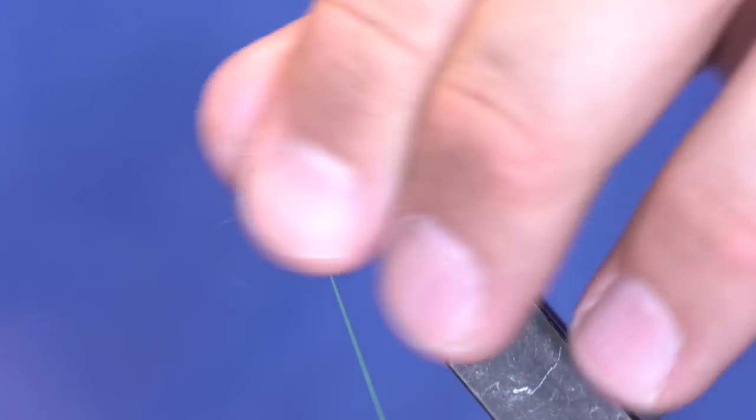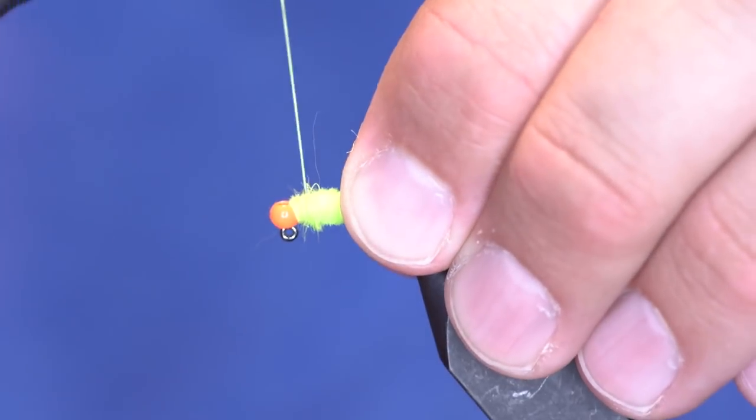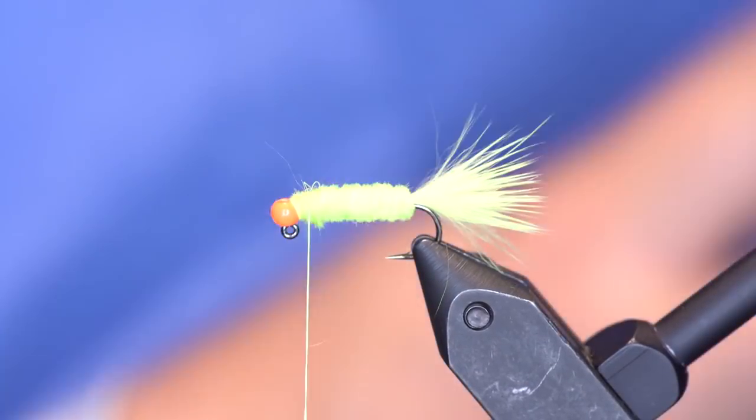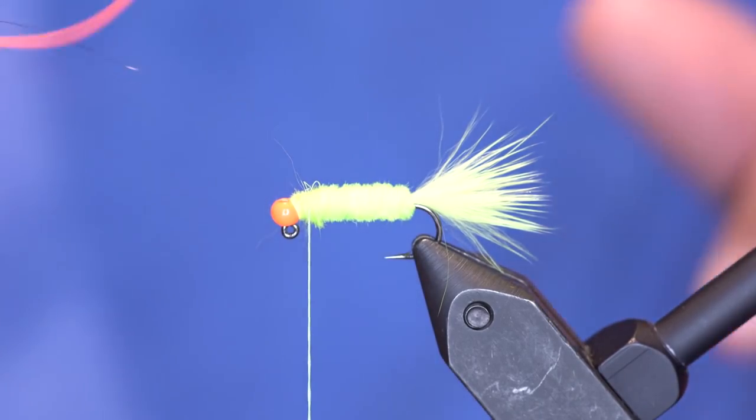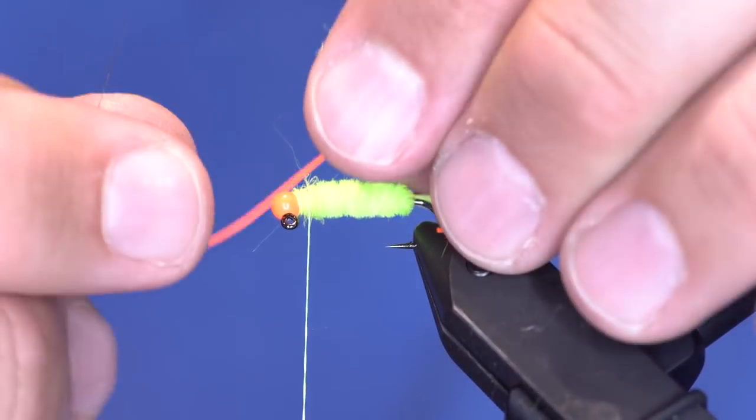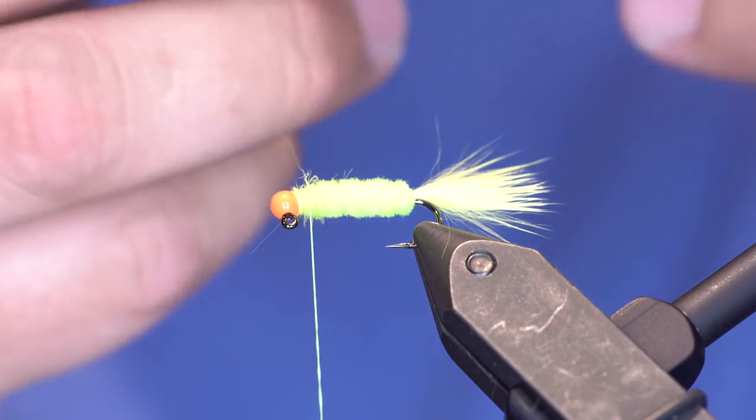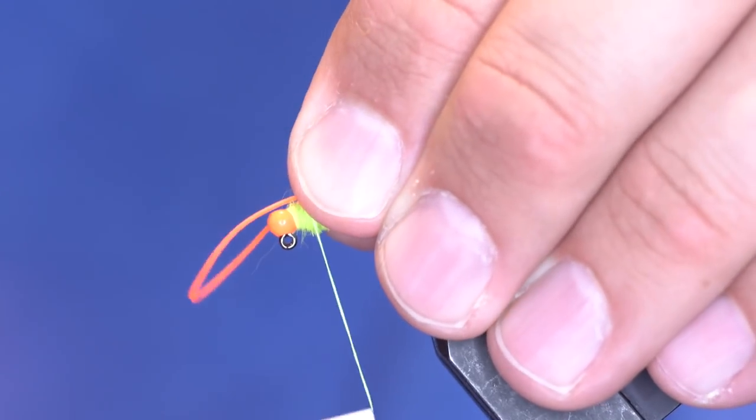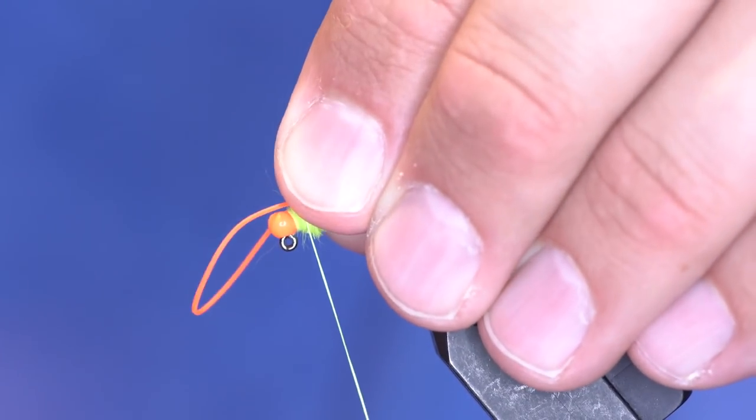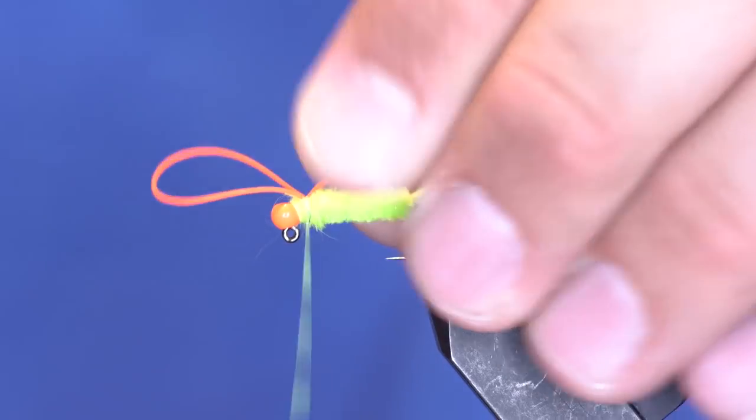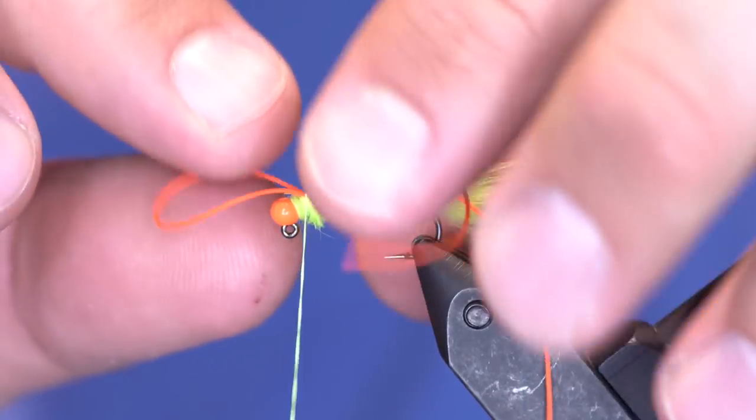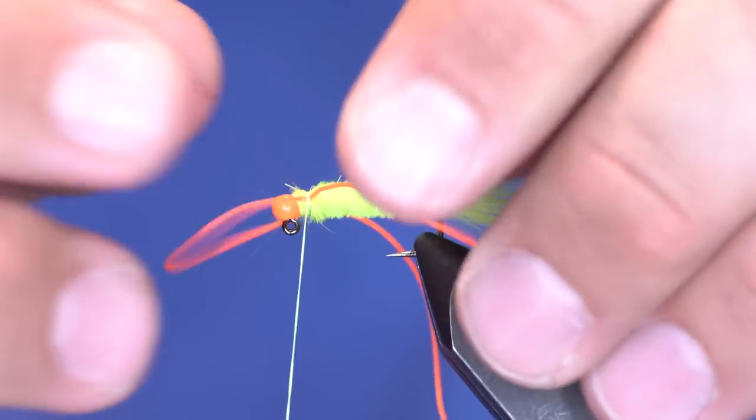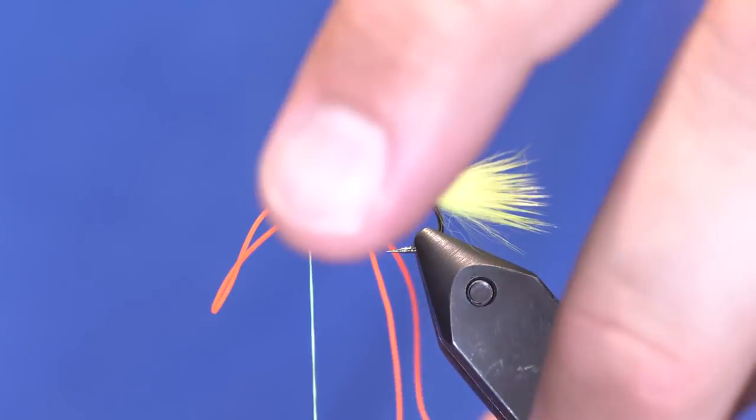So I'm going to wrap the dubbing around the thorax and then leave my thread to sit right in the middle of that thorax. From here, I'm going to take some small round rubber legs, just fold that piece in half, and tie that in just like that. And I can take one side of the leg and pull it toward me, one side and pull it away from me, just like that.